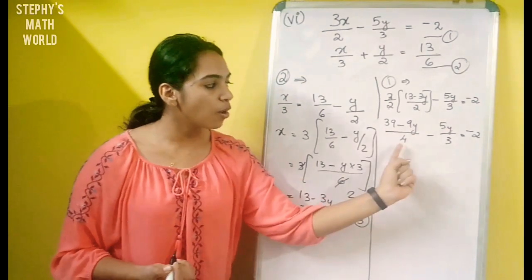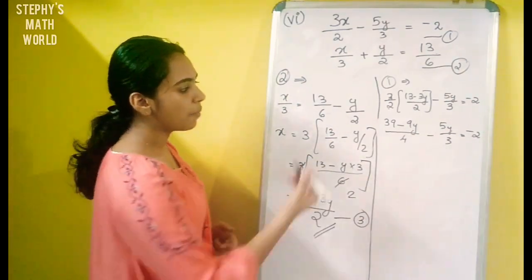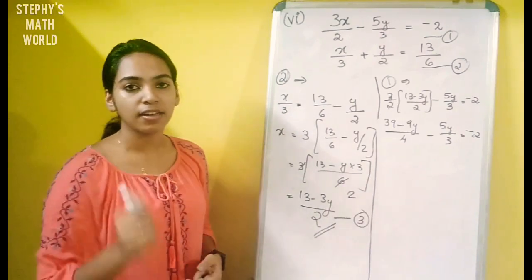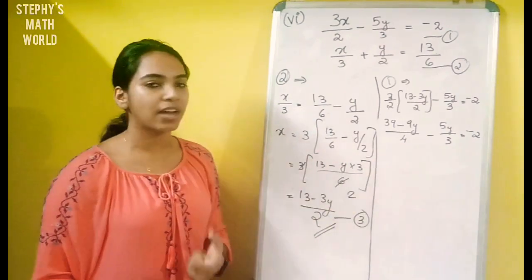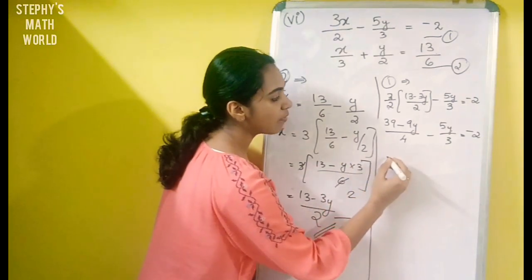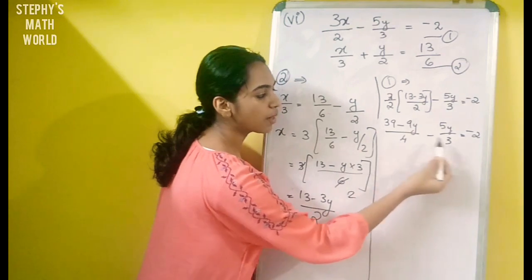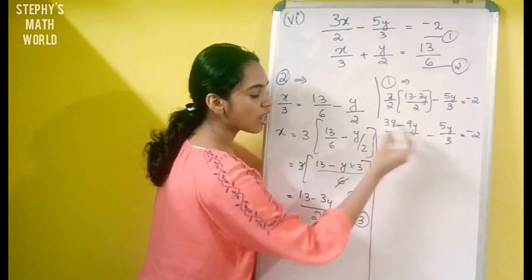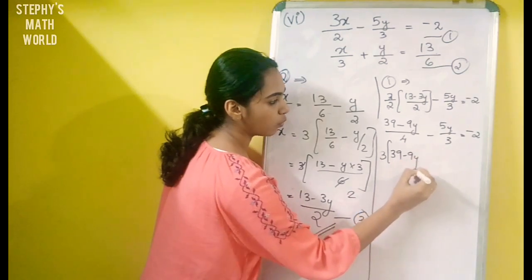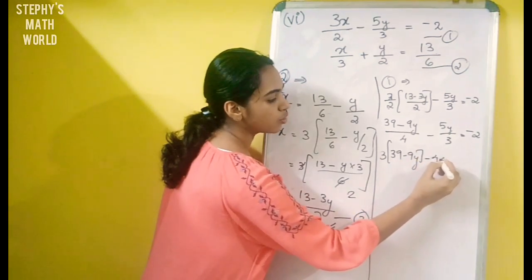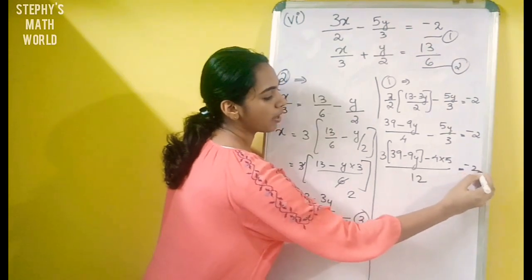We have to multiply the LCM. What is the LCM of 4 and 3? It is 12. We have to multiply by 12 using prime factorization. So here we have 12. If we multiply by 12, we multiply 4 by 3 by 4. Then 4 into 5 divided by 12 is equal to minus 2.